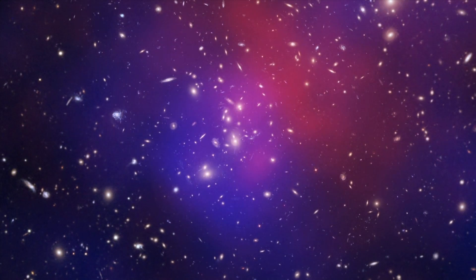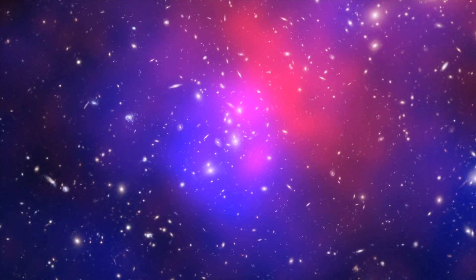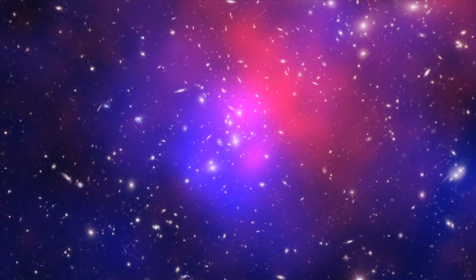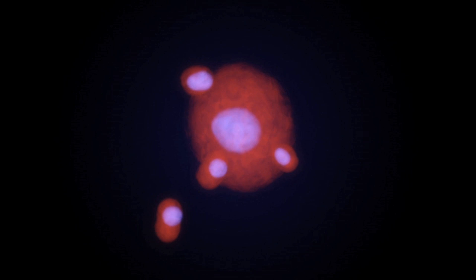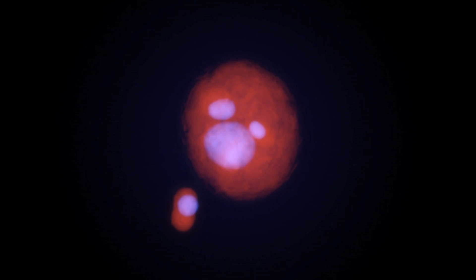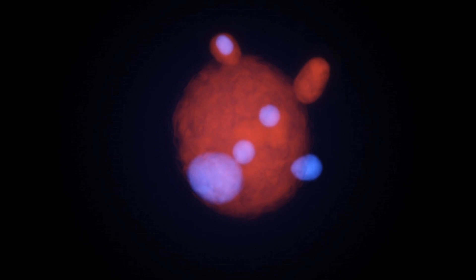Comparing the location of the galaxies, the hot gas and the dark matter shows that this is not a simple crash between two clusters. By reconstructing the history of Pandora's cluster, astronomers think that it must have formed from four different clusters involved in a series of collisions over a period of some 350 million years.